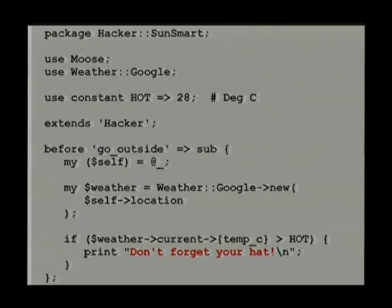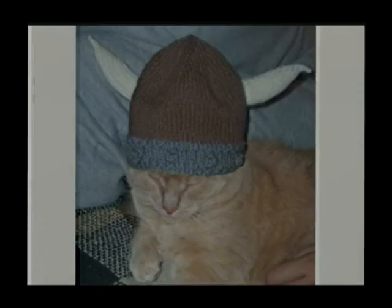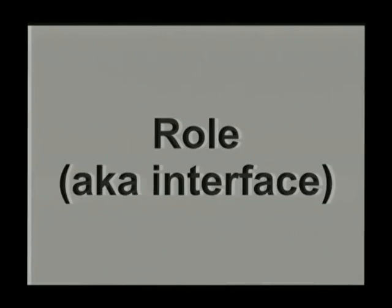Now there is a problem — it makes the assumption that only hackers can have hats. What I've done is tied all this sun-smart hat-wearing logic to the hacker class. But what if I've got something which is not a hacker which can wear a hat? Wouldn't it be nice if we could have something like a role? Roles — also known as interfaces or mix-ins — allow you to say, here's a little bundle of constraints and methods, and I can apply that to different things. Birds can fly, helicopters can fly, airplanes can fly — they all have the flying role, even though they implement it in different ways.